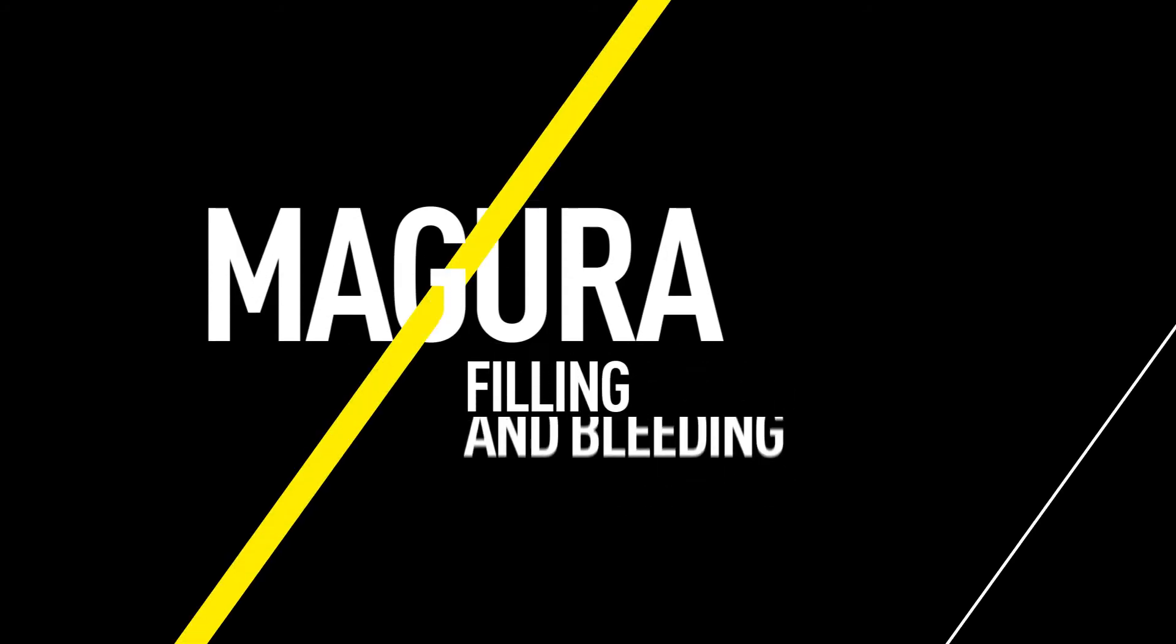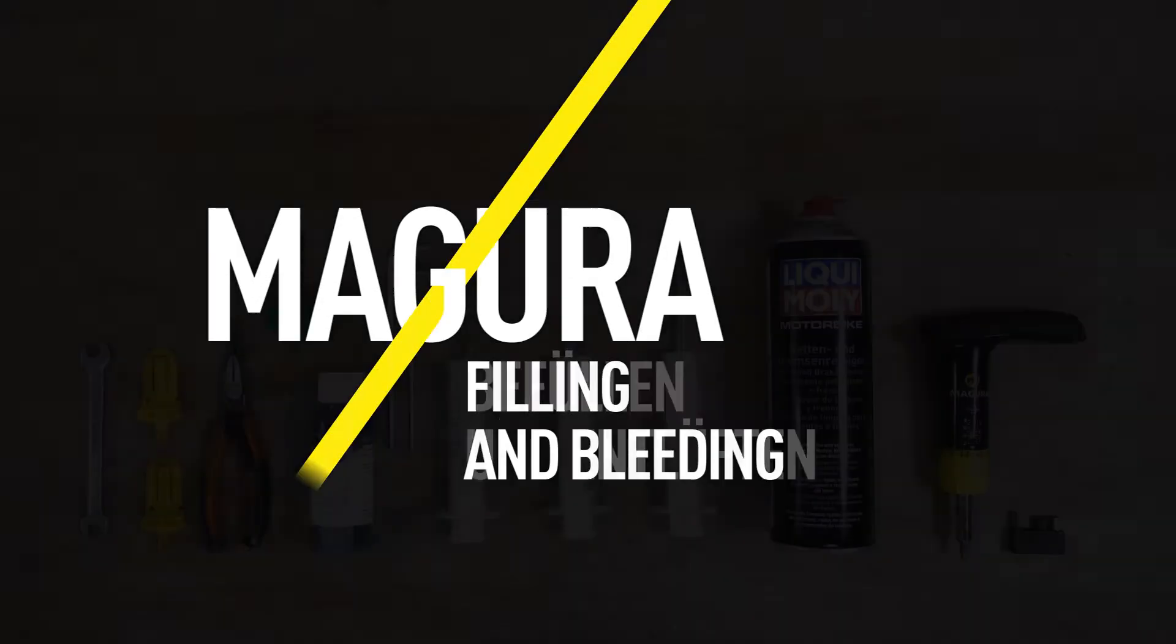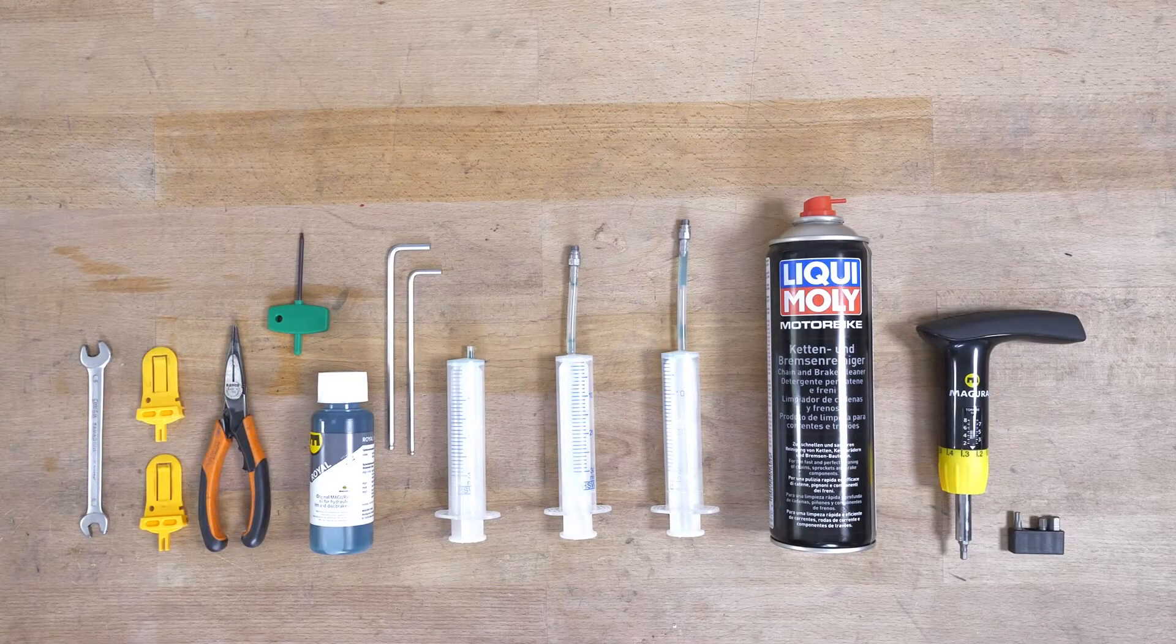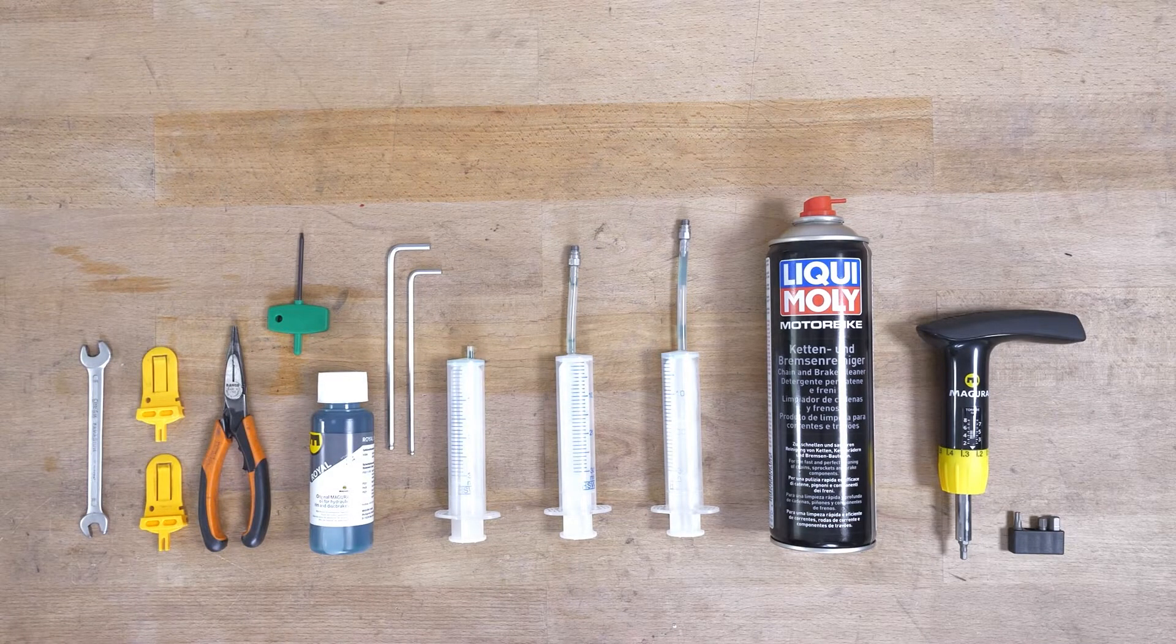This video will guide you through the filling and bleeding procedures for a Magura BIG system. You can find information about the tools you will need in the video description. The Magura BIG is available in a version with one brake caliper and, in a twin model, with two calipers connected to a master cylinder.